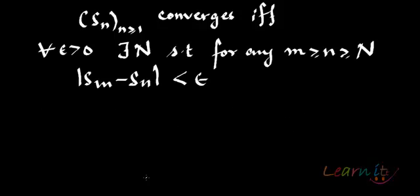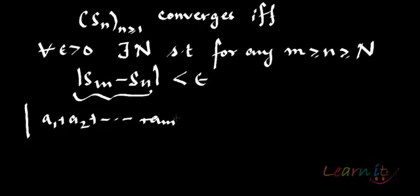But what is S_m - S_n? It will essentially be A_1 + A_2 + ... + A_m minus A_1 minus A_2 and so on and so forth till A_n.